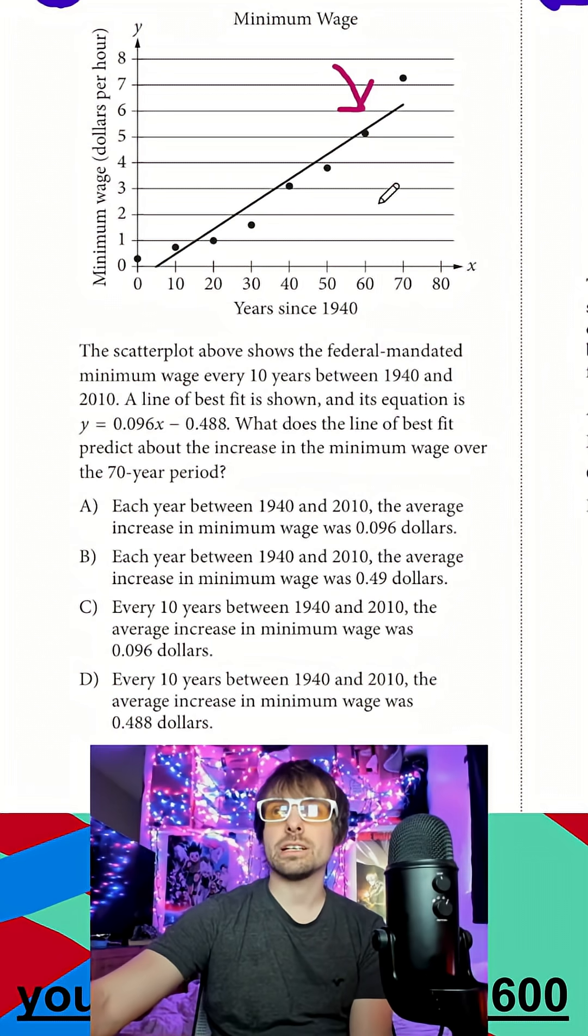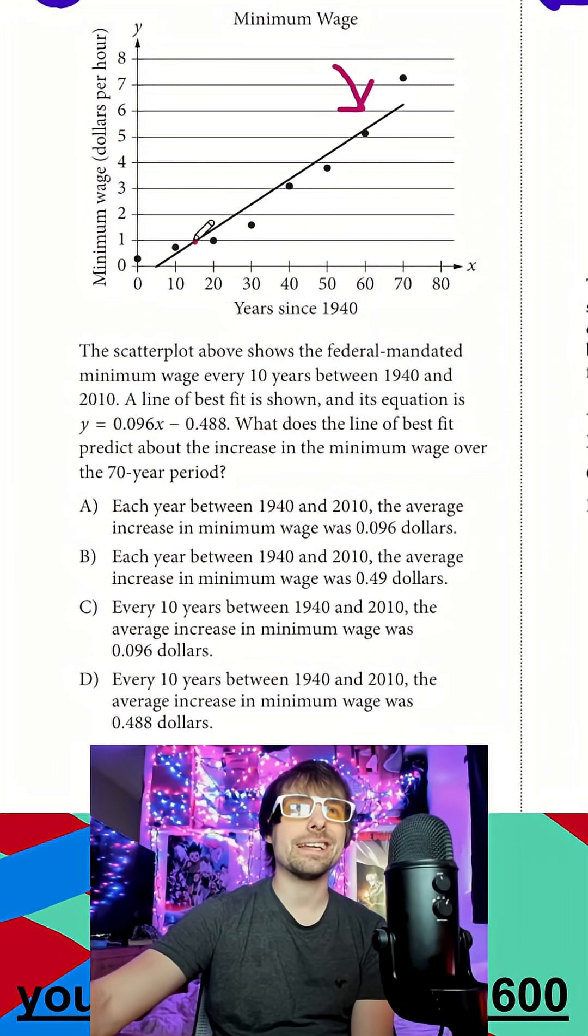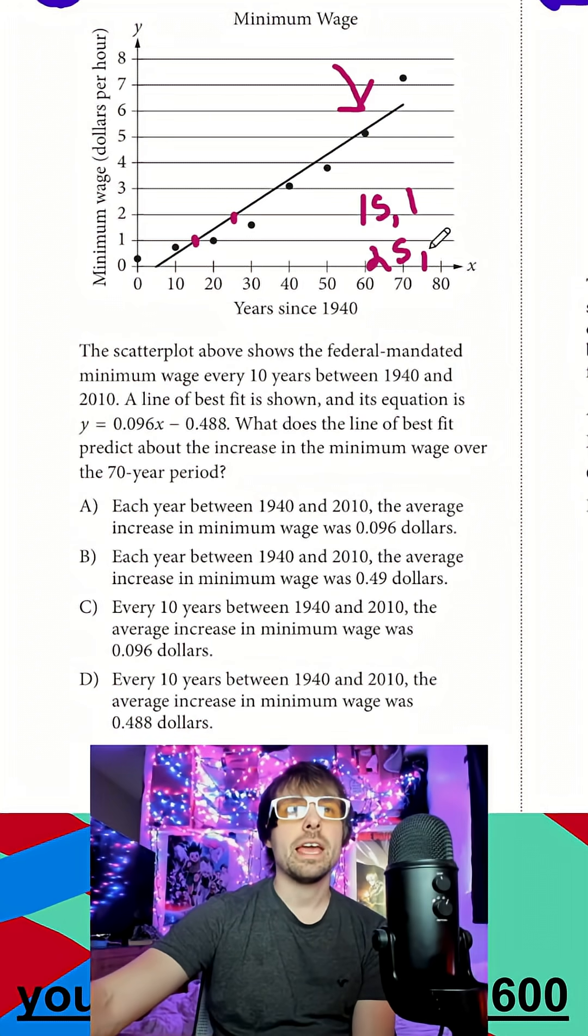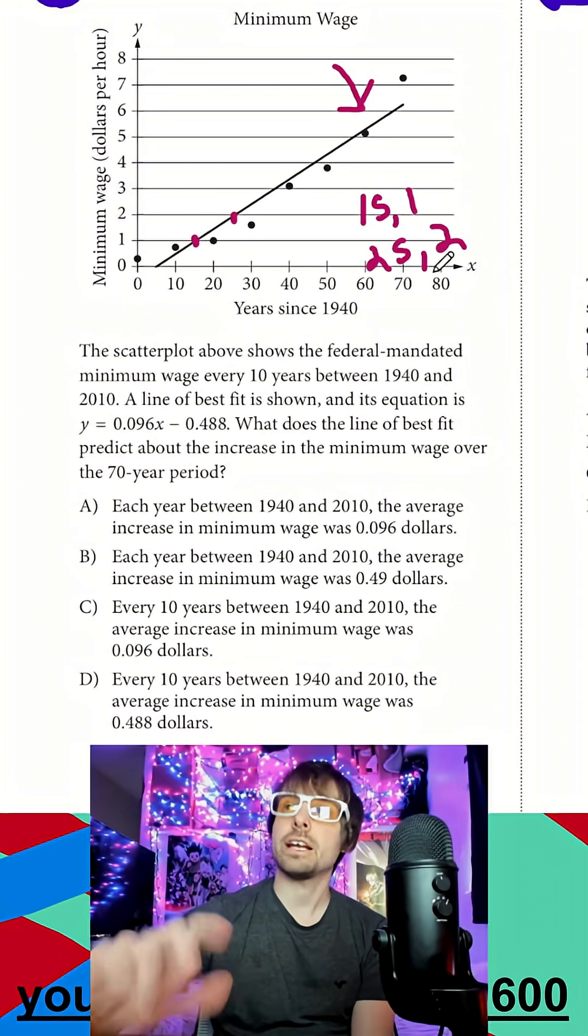I would consider trying to calculate my own equation by maybe getting, what does that look like? 15, 1. And then I need a second point, maybe that's going to be like 25, 2. I could put those two in decimals and calculate my line.